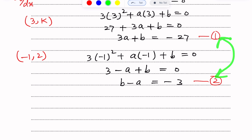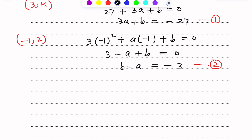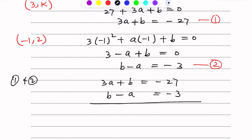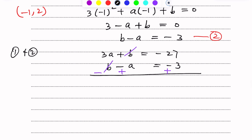Now we solve equations 1 and 2 simultaneously to get the values of a and b. Equation 1: 3a + b = -27. Equation 2: b - a = -3. Subtracting (or adding after sign change), the b terms cancel, giving 4a = -24, so a = -6.